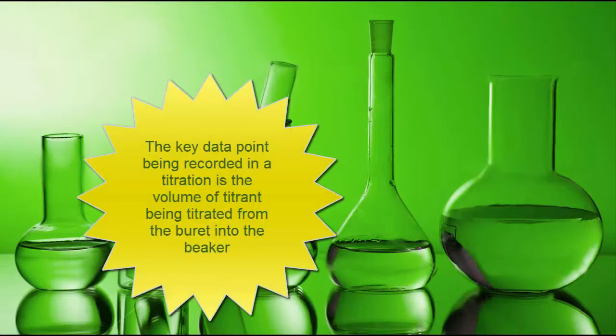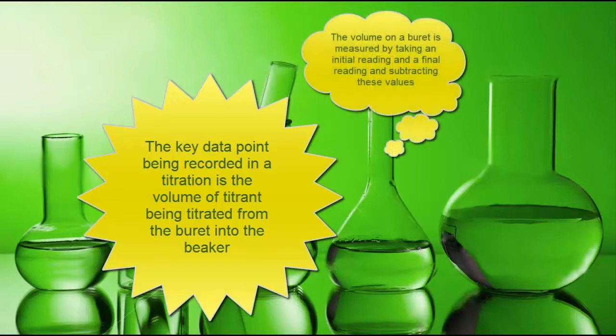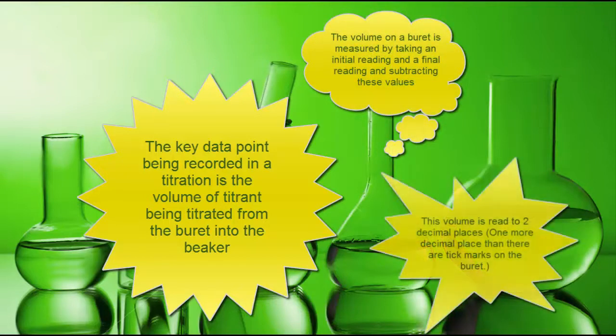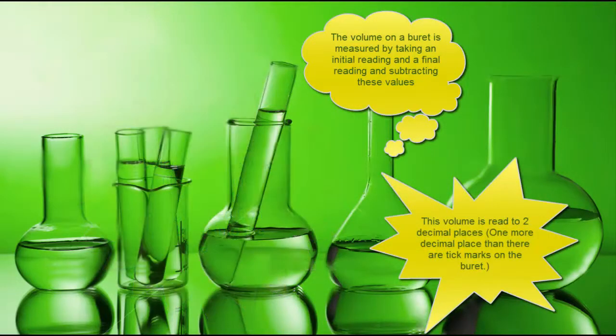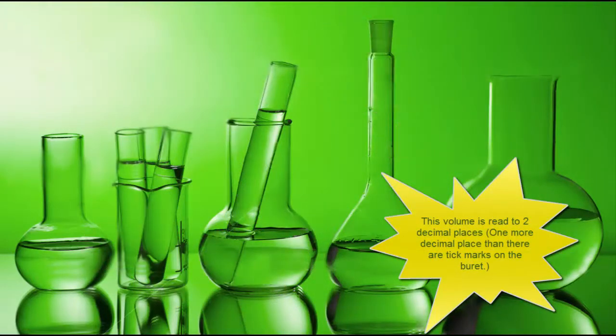The key data point being recorded in titration is the volume of the titrant being titrated from the burette into the beaker. The volume on a burette is measured by taking an initial reading and a final reading and subtracting these values. This volume is read to two decimal places, one more decimal place than there are tick marks on the burette.